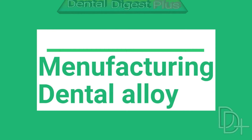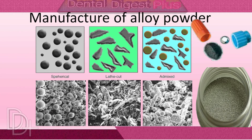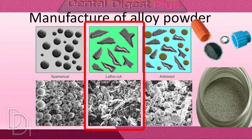Manufacturing dental alloy: The particles of the amalgam alloy may be formed by two methods. The first method, used to produce lath-cut dental amalgam powder, is by grinding an ingot of metal into a milling machine. Such amalgam alloys are called lath-cut alloys.